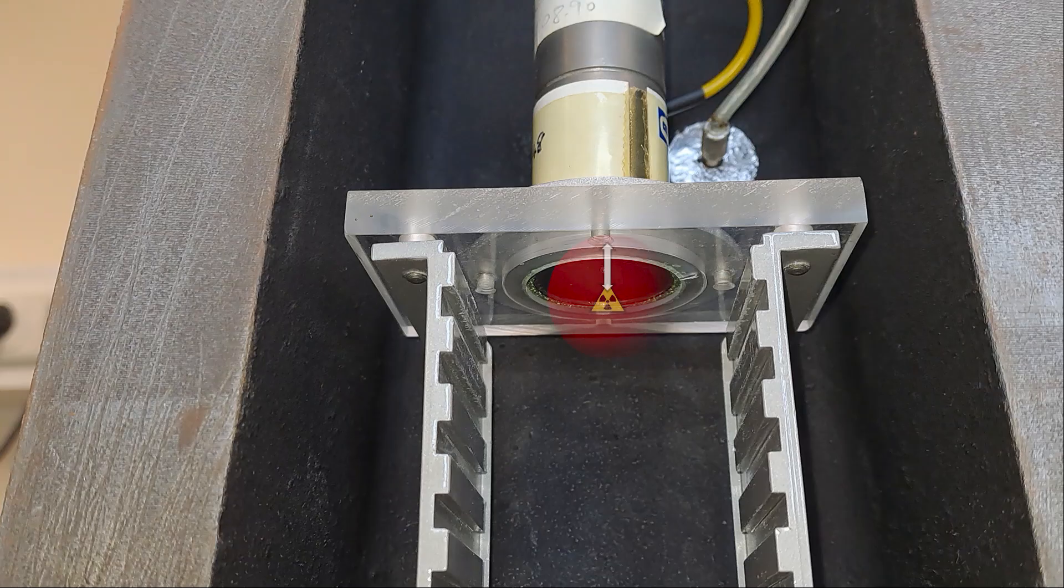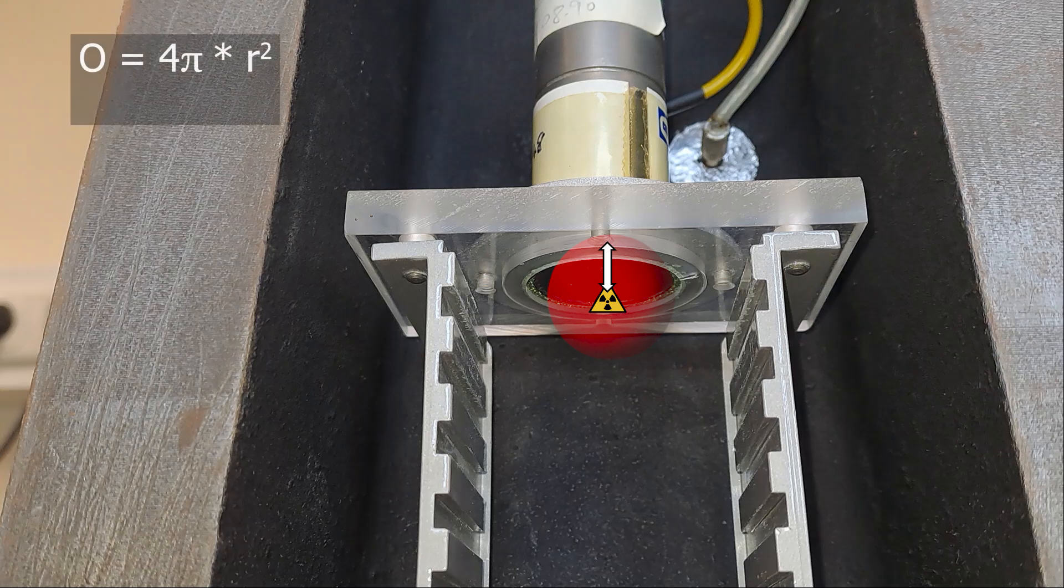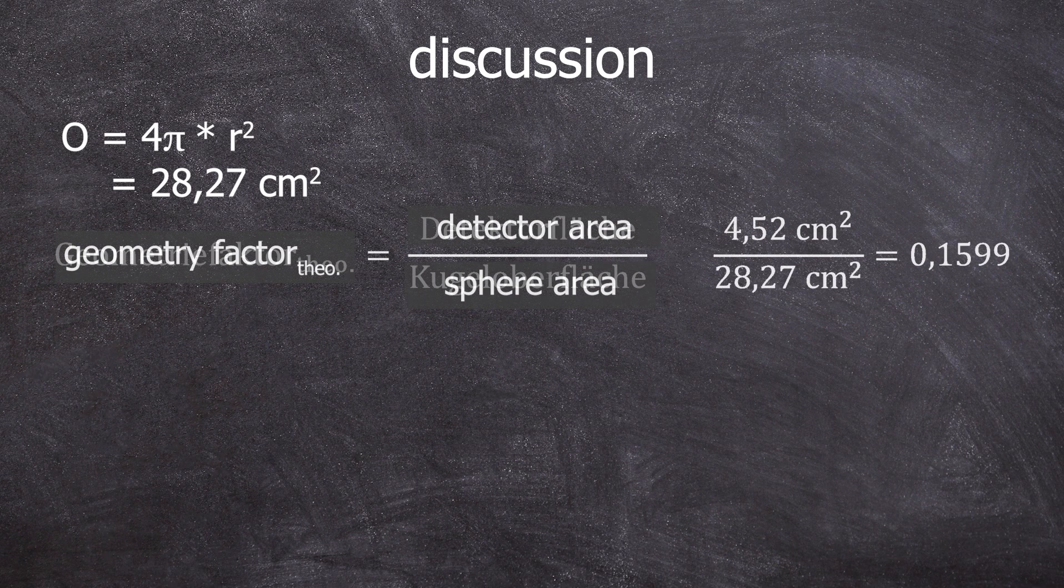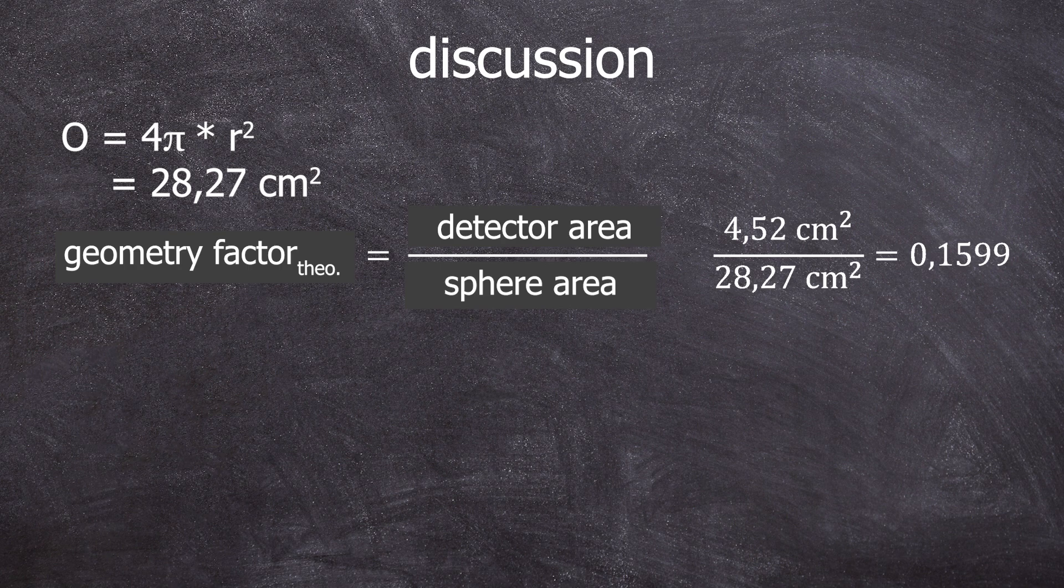In the first position, we have a sphere with a radius of 1.5 centimeters. Thus the surface area of imagined sphere is 4 times pi times r squared, which is 28.27 centimeters squared. This means our detector covers only 4.52 divided by 28.27, which is 15.99% of the surface area. Our theoretical geometry factor is 0.1599.